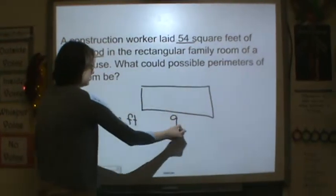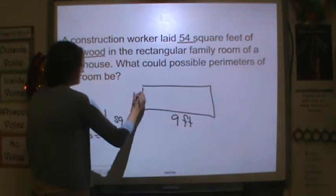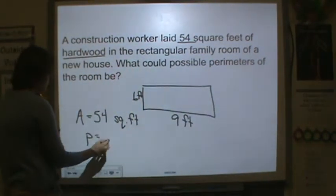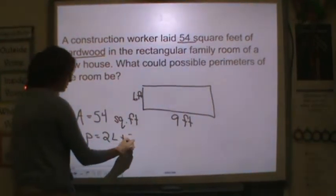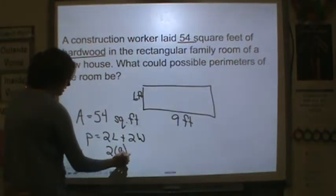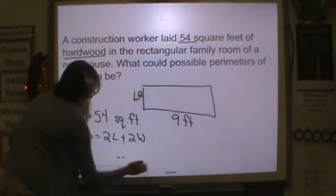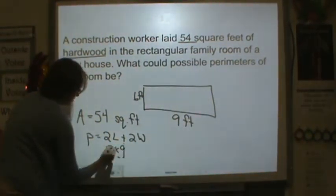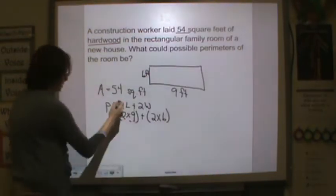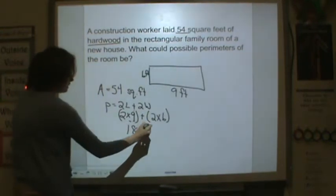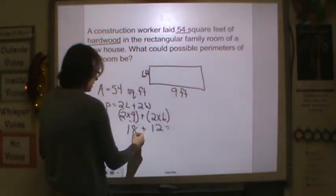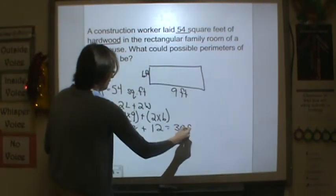Well, 9 feet by 6 feet would be 54. Now I need to think about what the perimeters are. Remember, perimeter is 2 length plus 2 width, or 2 times 9 plus 2 times 6. 2 times 9 is 18. 2 times 6 is 12. 18 and 12 is equal to 30 feet.